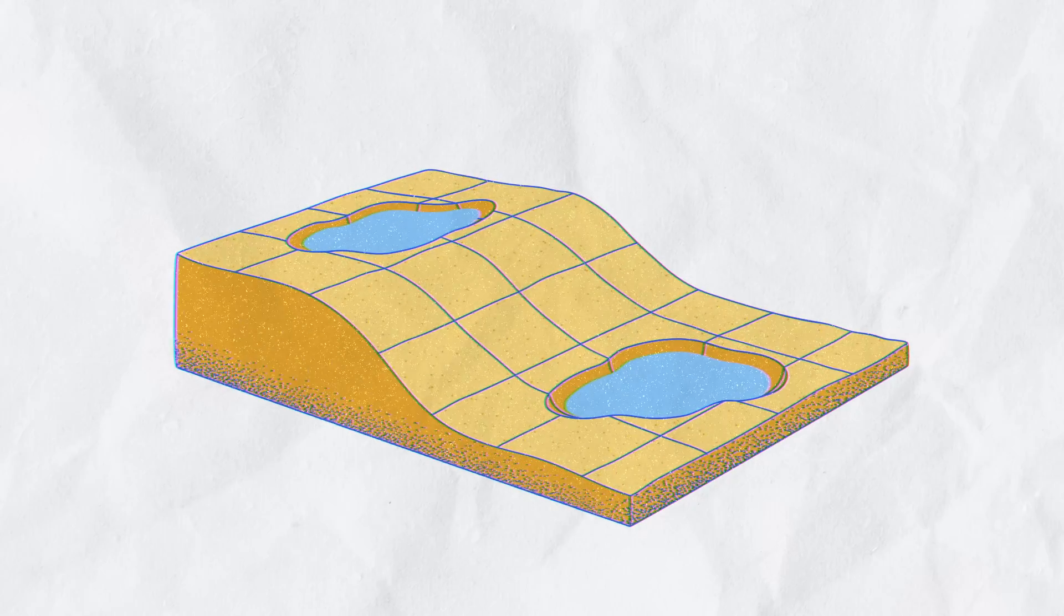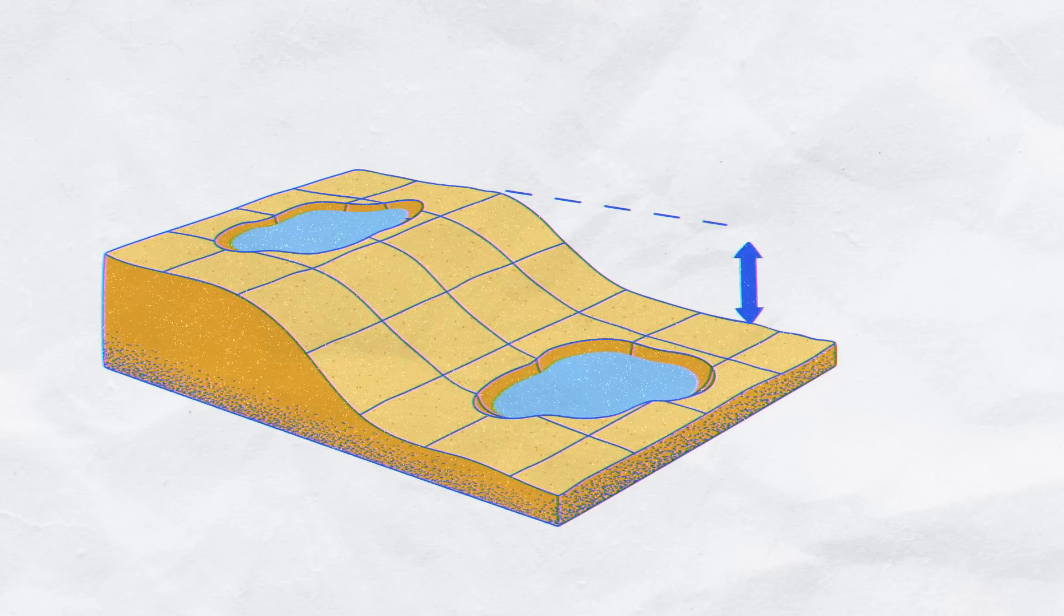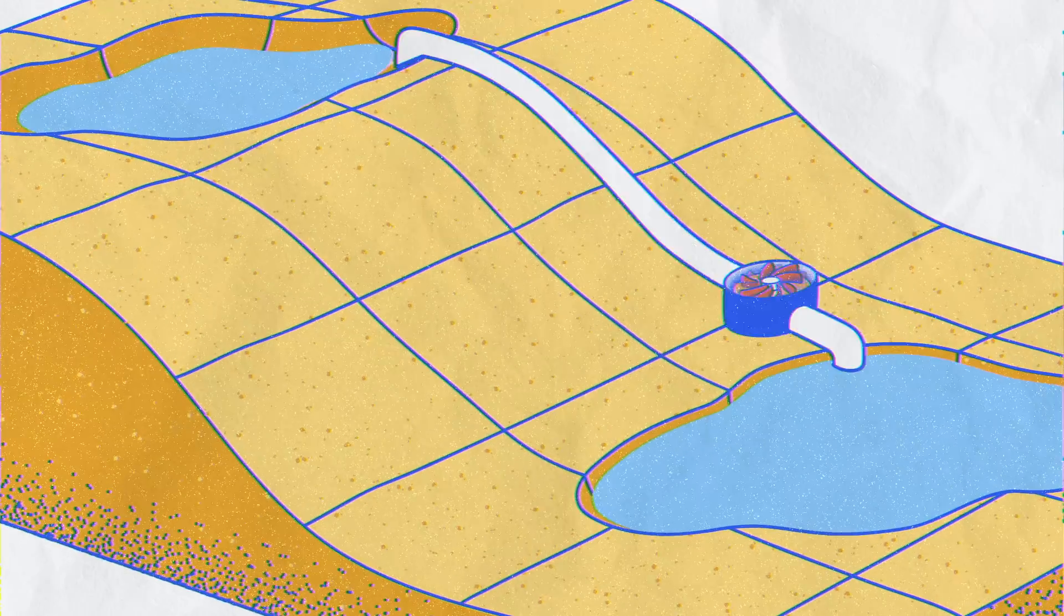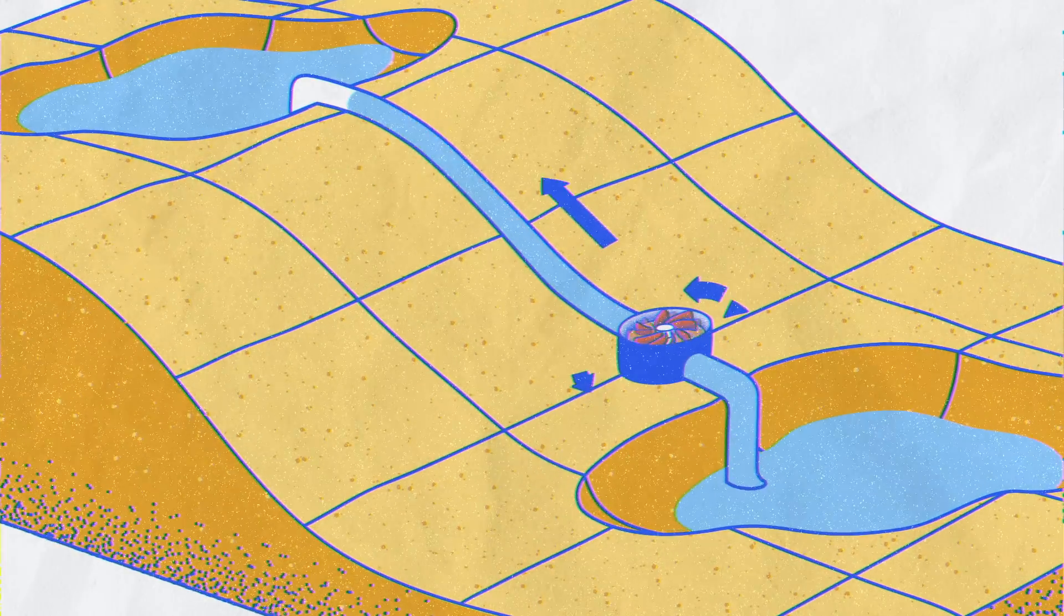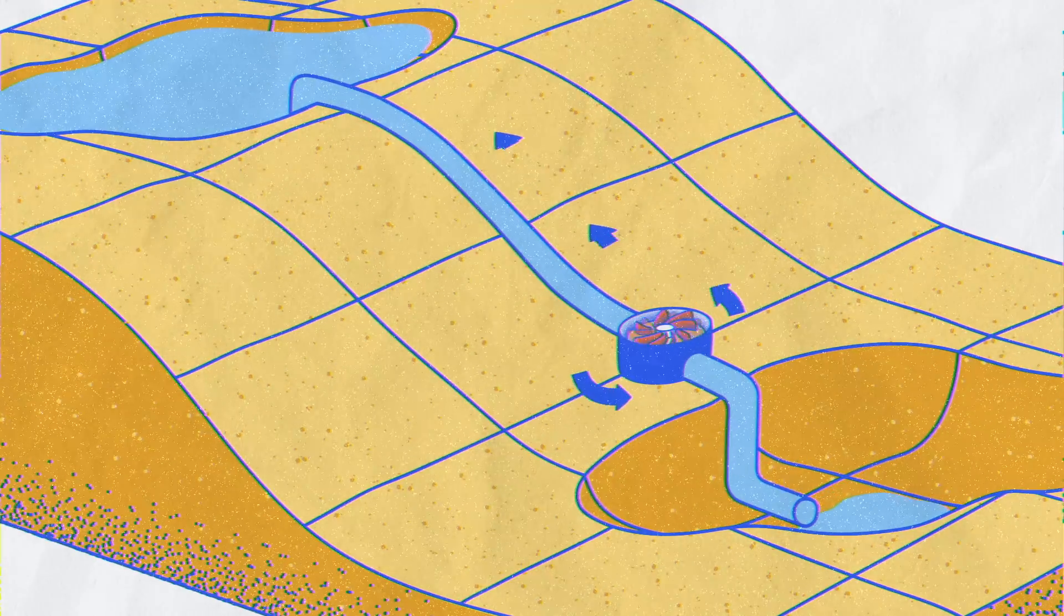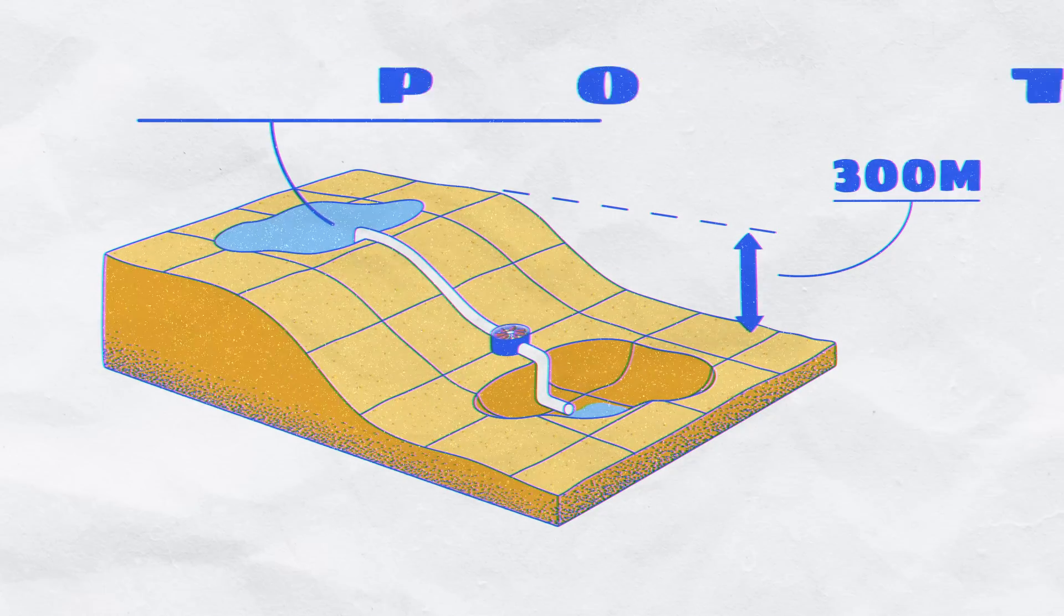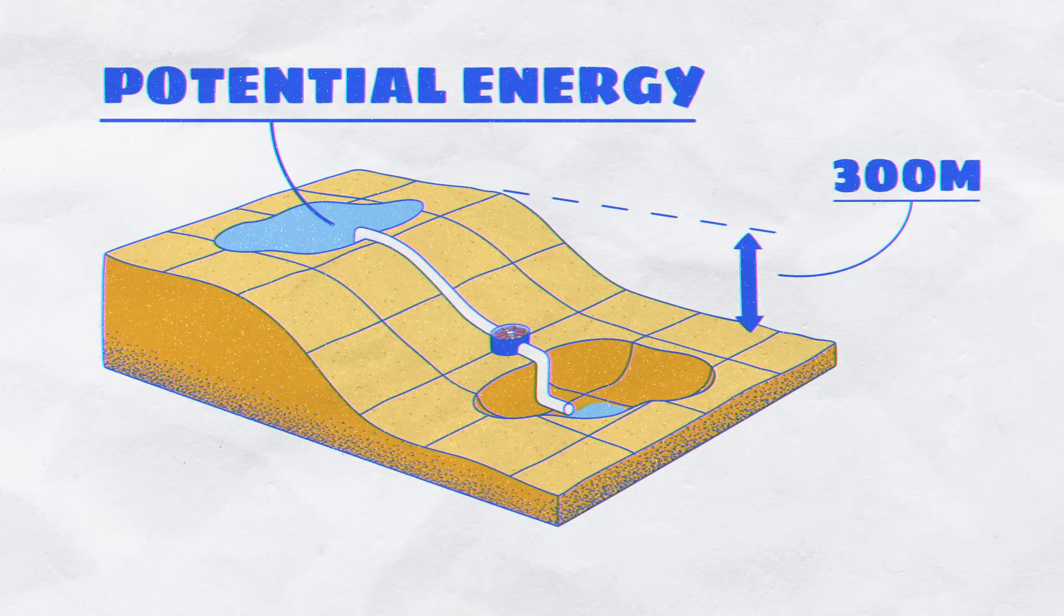How do the two lakes store and release energy? First, one is 300 meters higher than the other. Electricity powers pumps that move billions of liters of water from the lower lake to the higher one. This stores the energy by giving the water extra gravitational potential energy.